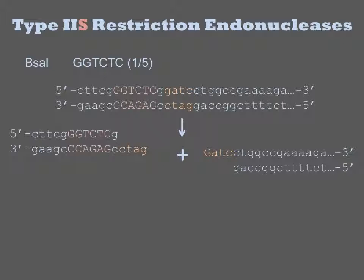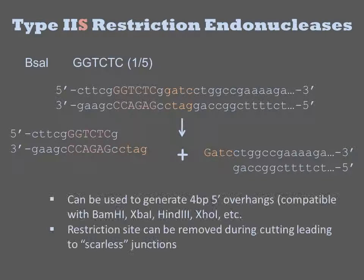Type 2S enzymes recognize a specific sequence but then cleave the DNA external to it. BsaI and BsmBI are the most commonly used enzymes in this class. BsaI recognizes the sequence GGTCTC, reaches over 1 base, and then generates a sticky end composed of the next 4 bases. The products of BsaI digestion can be joined by ligation to overhangs generated from sites such as BamHI and EcoRI. These enzymes are particularly useful because the restriction site can be removed during the course of digestion, leaving no trace of the original sequence. Thus upon ligation, there is no remnant of the restriction site, and this can be used to generate scarless junctions between two DNAs.